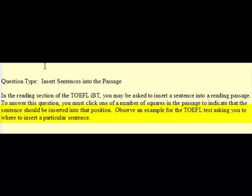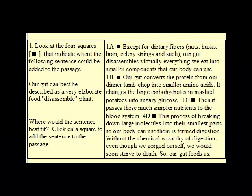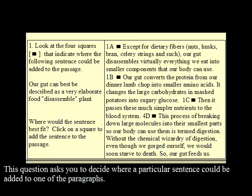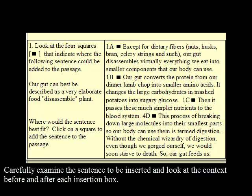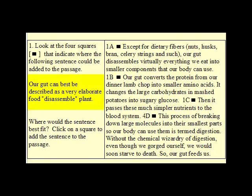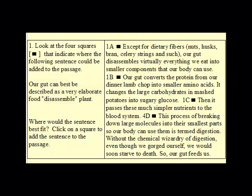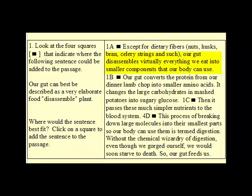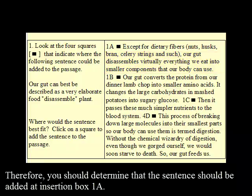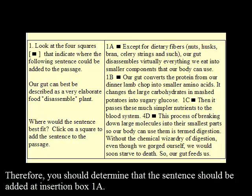Observe an example of the TOEFL test asking you where to insert a particular sentence. Pause the video to read the question and the reading passage. This question asks you to decide where a particular sentence could be added to one of the paragraphs. Carefully examine the sentence to be inserted and look at the context before and after each insertion box. The sentence mentions that the gut is described as a very elaborate disassembly plant, and the context after insertion box 1a mentions that the gut disassembles virtually everything we eat into smaller components. Therefore, you should determine that the sentence should be added at insertion box 1a.